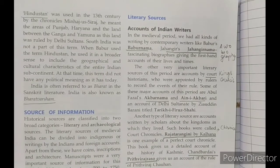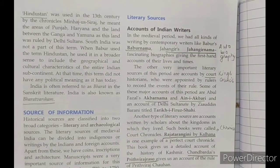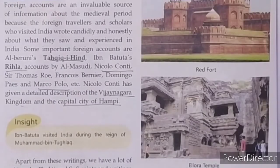The fourth paragraph covers Indian writers such as Firdausi's Shah Nama, Inayat Khan's Shah Jahan Nama, and Minhaj-us-Siraj's Tabaqat-i-Firoz Shahi. The fifth paragraph covers prominent Indian texts like the Puranas, Vedas, Brahmanas, and the Mahabharata.